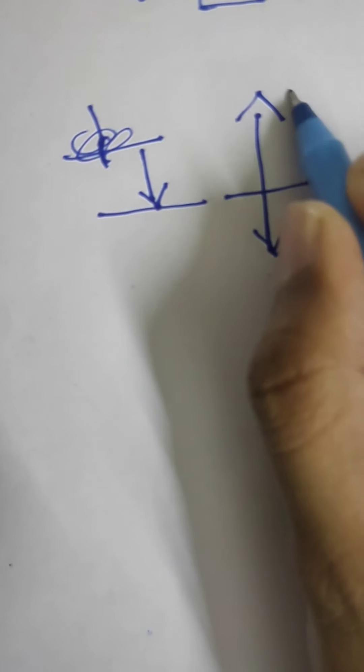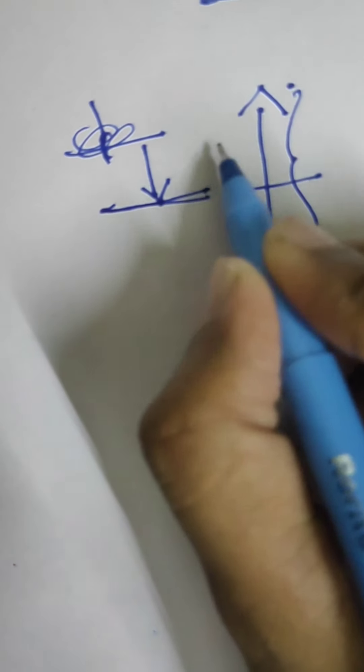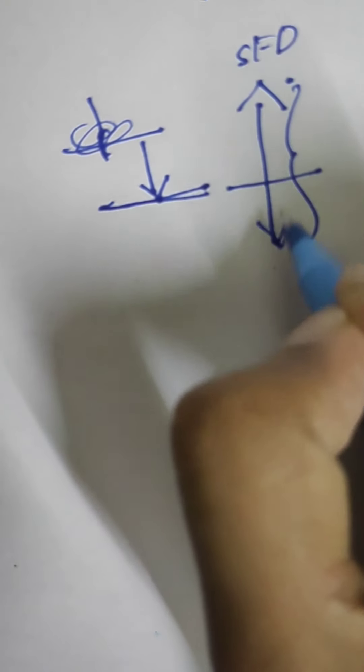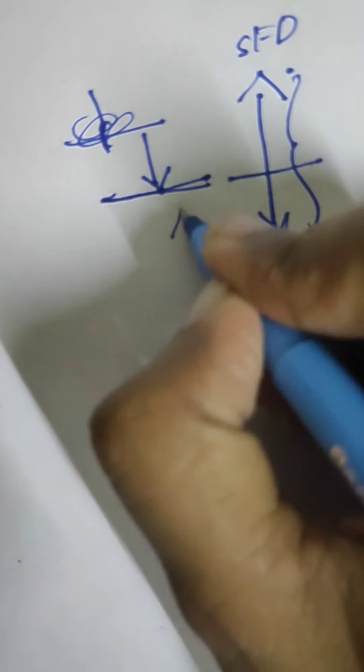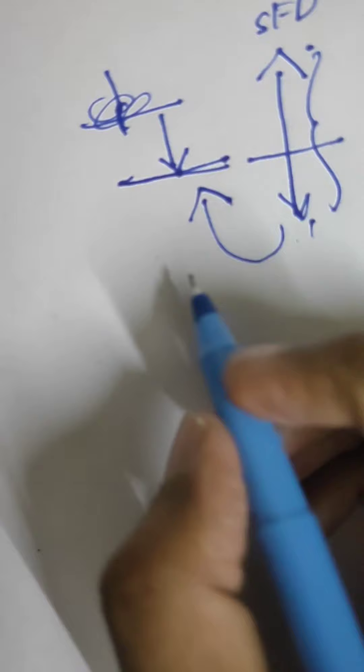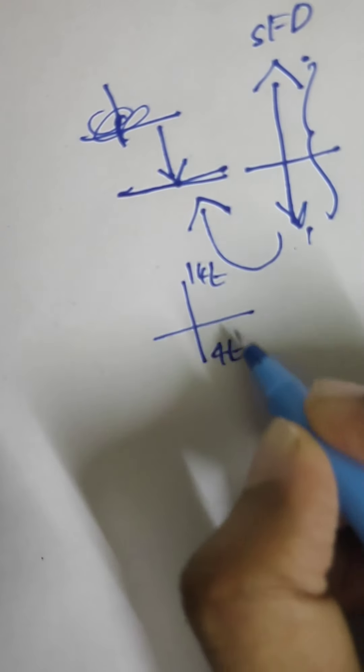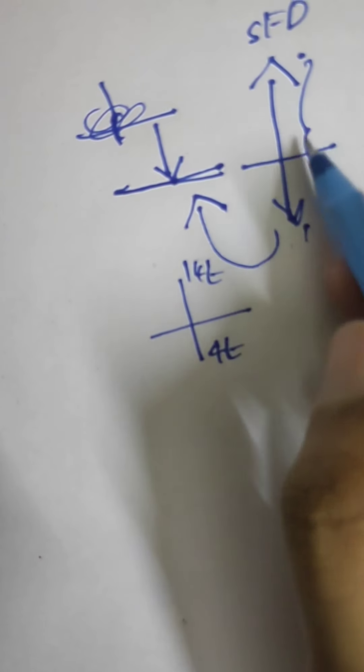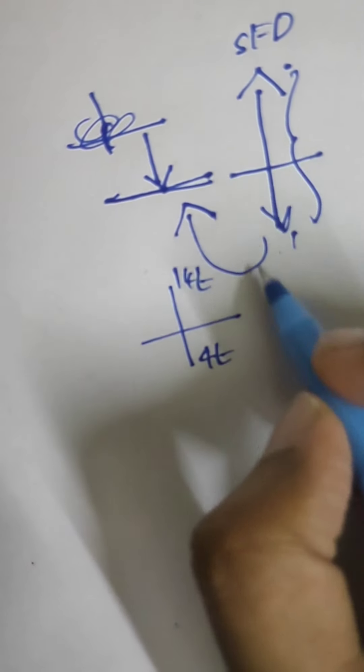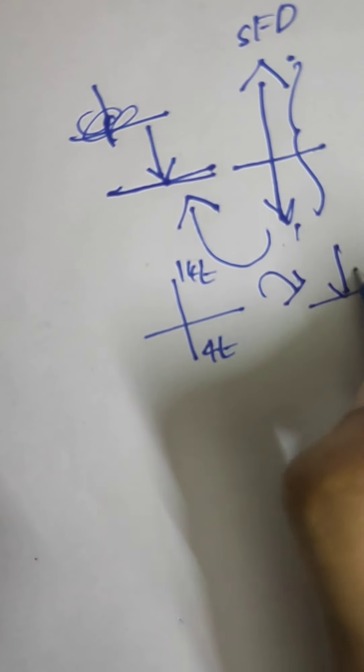If a concentrated load is acting, then the shear force diagram will show a sudden change — either upward or downward. It is just the opposite. Here in the figure we can see 14t and minus 14t, so there is a sudden change in shear force, which means the load will be a point load.